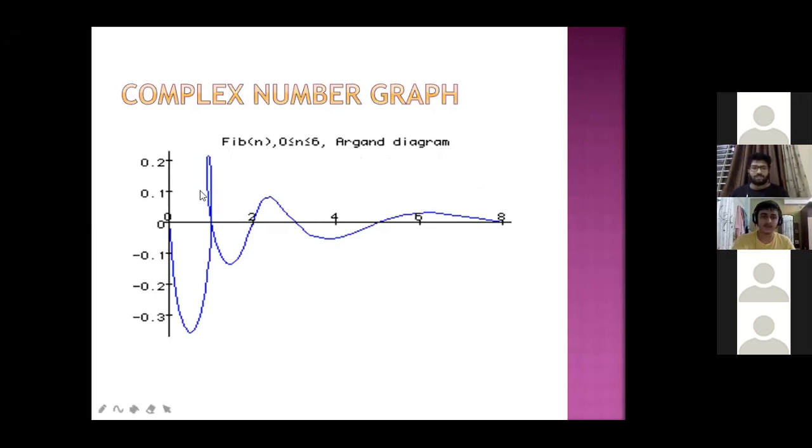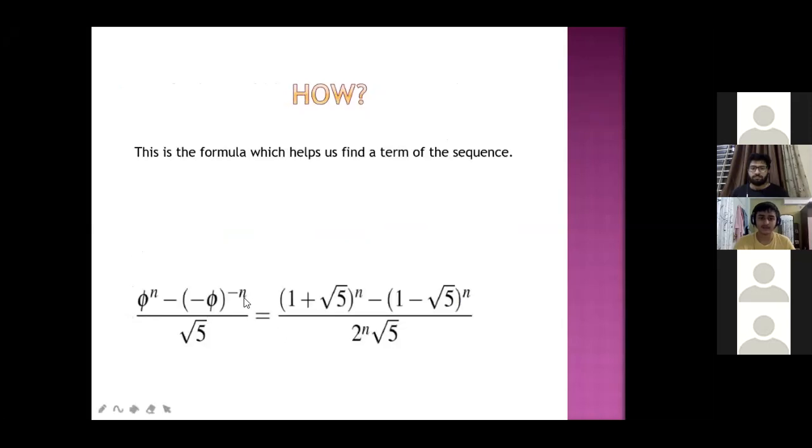Now we are going to complex number graphs. If we represent this graph in complex form, we will have a graph. This is the formula for finding a term of the sequence of Fibonacci numbers. This is the golden ratio phi. And this is the explanation. When we substitute the value, we will get the answer. Golden ratio of 1.618 something.